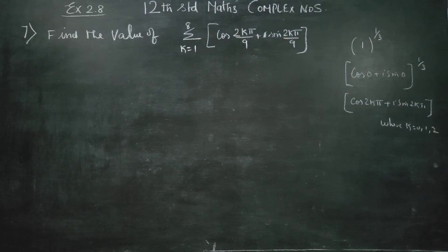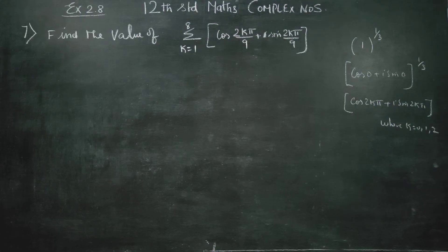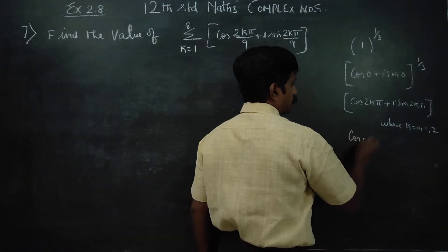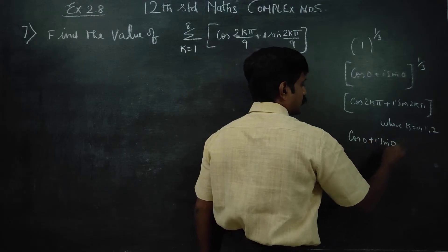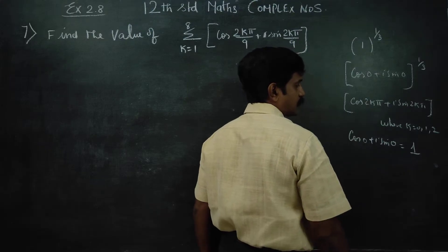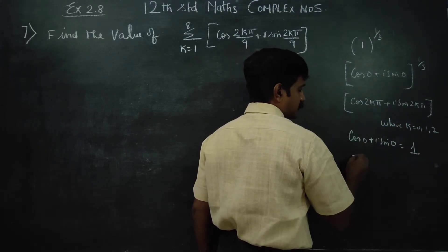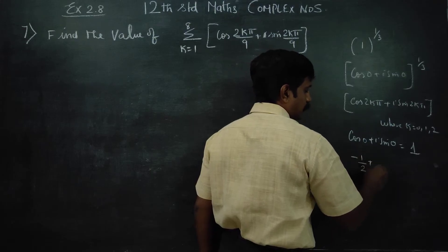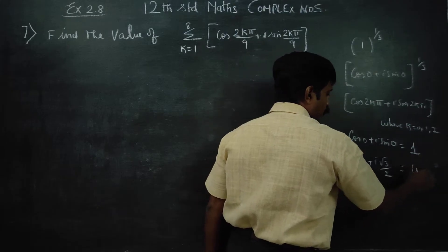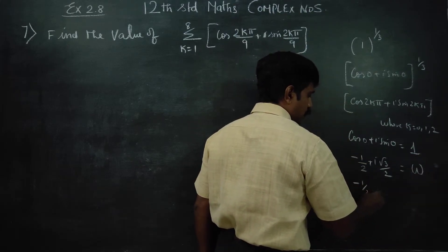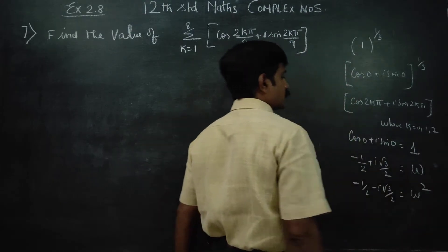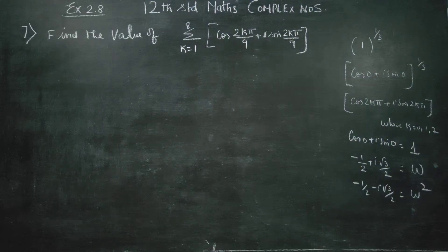For the cube root, add 2kπ to the argument and substitute k equal to 0, 1, 2. Substituting k=0 gives cos 0 plus i sin 0, which equals 1. Substituting k=1 gives minus one-half plus i root 3 over 2, which is omega. Substituting k=2 gives minus one-half minus i root 3 over 2, which is omega square. These are the three cube roots of unity.